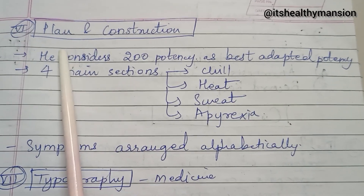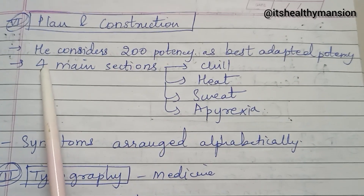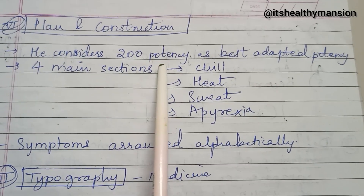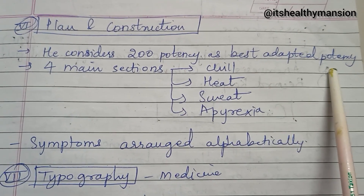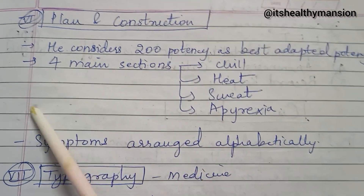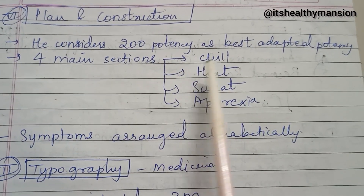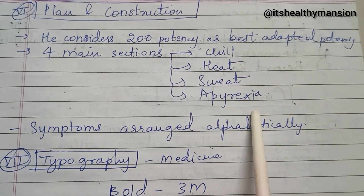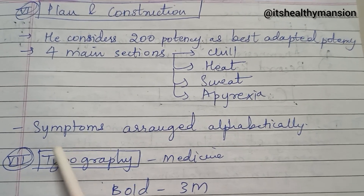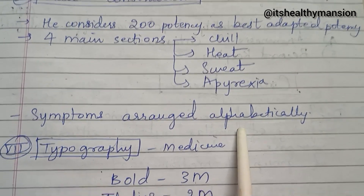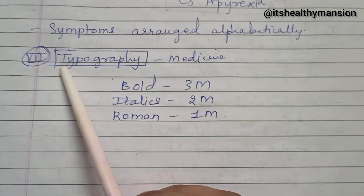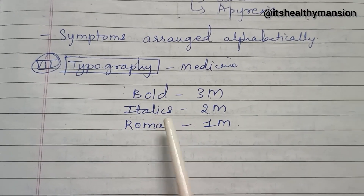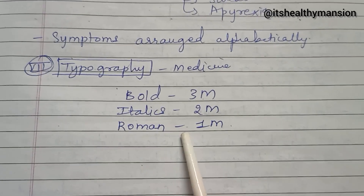Regarding the plan and construction of Allen's Repertory: he considered the 200 potency as the best adapted potency. The four main sections included are chill, heat, sweat, and apyrexia. Symptoms are arranged alphabetically, and the typography for medicines is bold, italics, and roman.